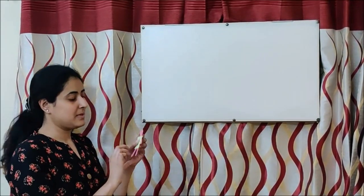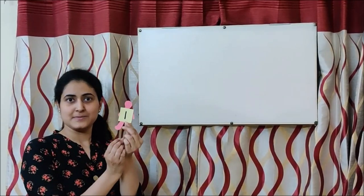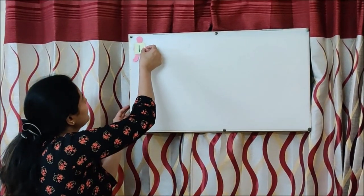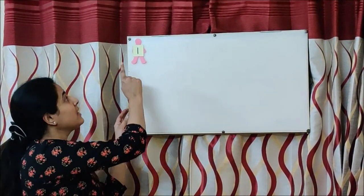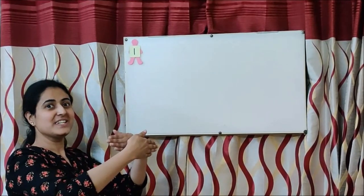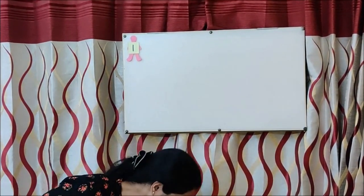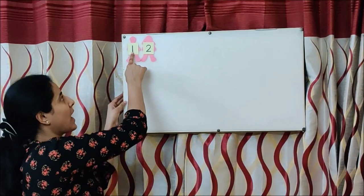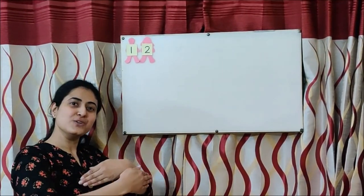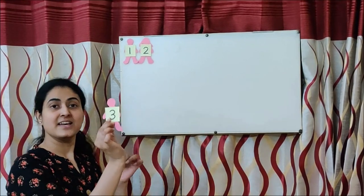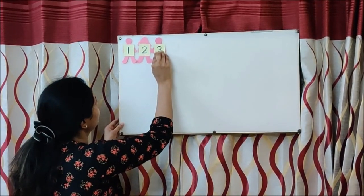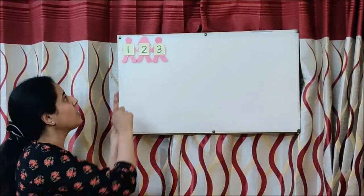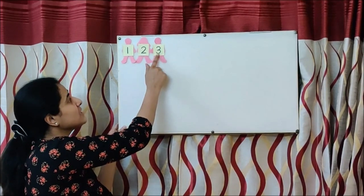First, you have to tell me what number is this? Yes, this is one. One. And what comes after one children? Correct. Two. One, two. What comes after two? Three. Yes, three. So you have to say with me now: One little, two little, three little Indians.